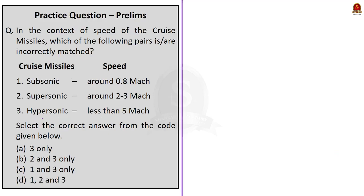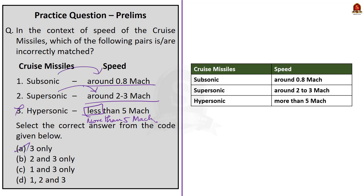Question 5 is about cruise missile speed classification. Statement 1 — Subsonic: around 0.8 Mach. Statement 2 — Supersonic: around 2 to 3 Mach. Statement 3 — Hypersonic: less than 5 Mach. Which pairs are incorrectly matched? The answer is option A — Statement 3 only. Hypersonic is not less than Mach 5; it is more than Mach 5. Subsonic is around 0.8 Mach and supersonic is around 2 to 3 Mach — both are correct.